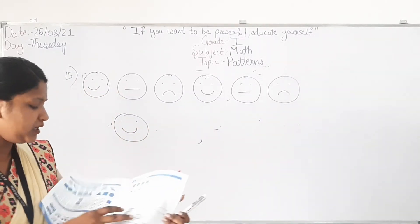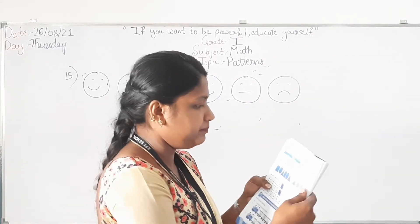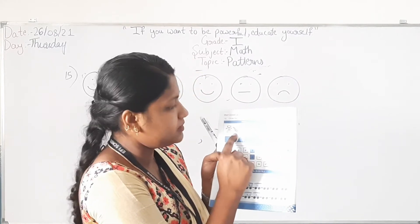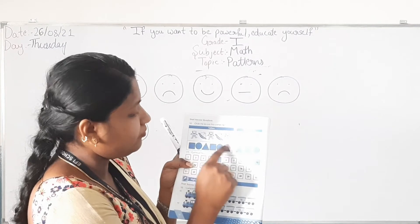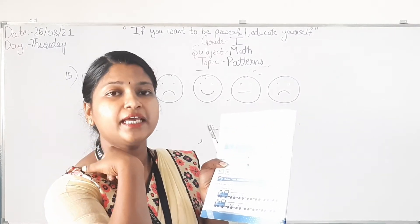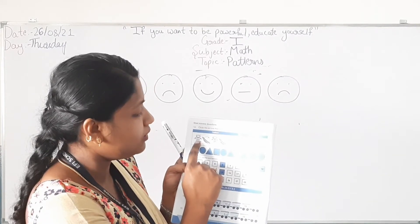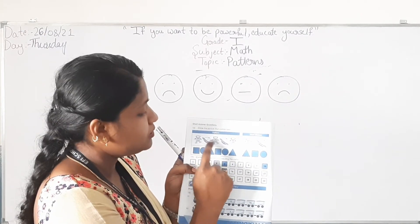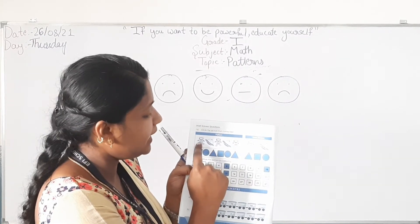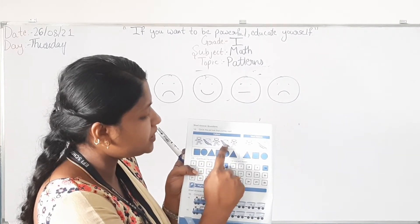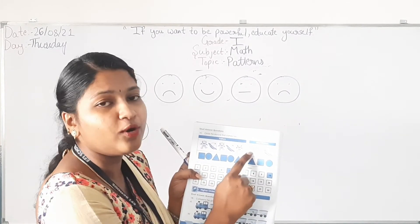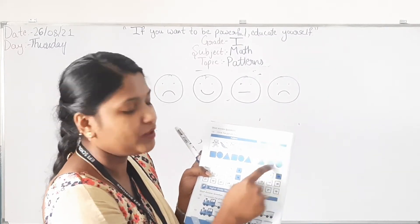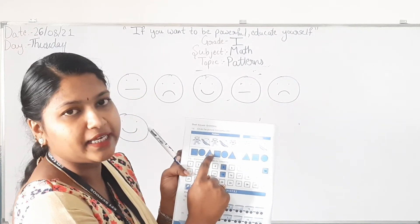Open page number 10. They have given a pattern — circle the picture that comes next. See the pattern: alien, spaceship, alien, spaceship, alien. After alien, spaceship will come. You have to tick that. Similarly do for the next one also.